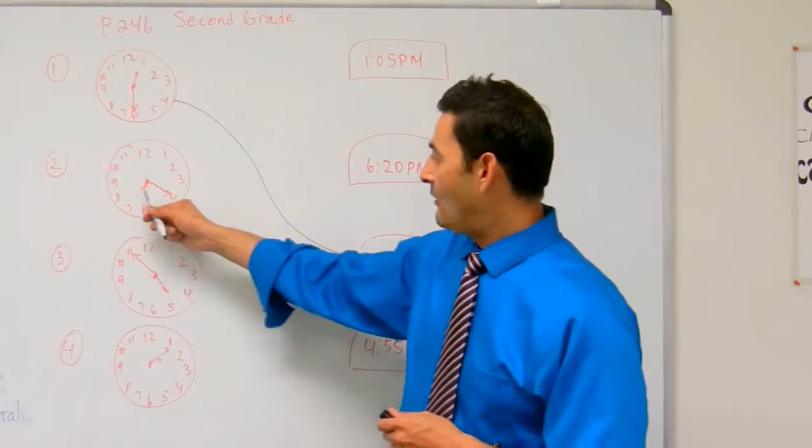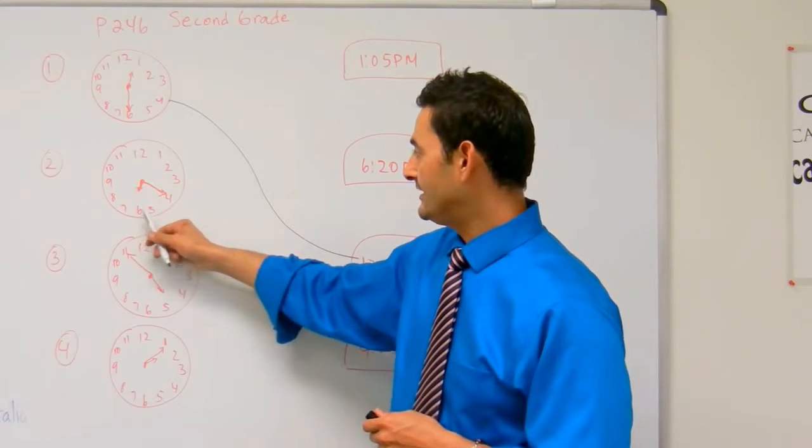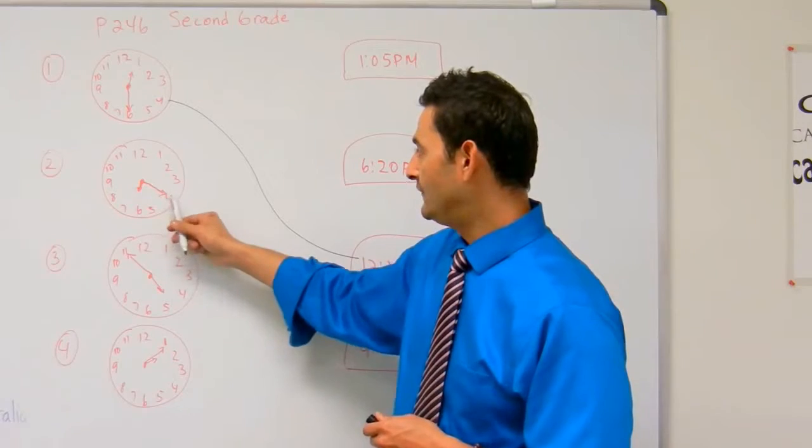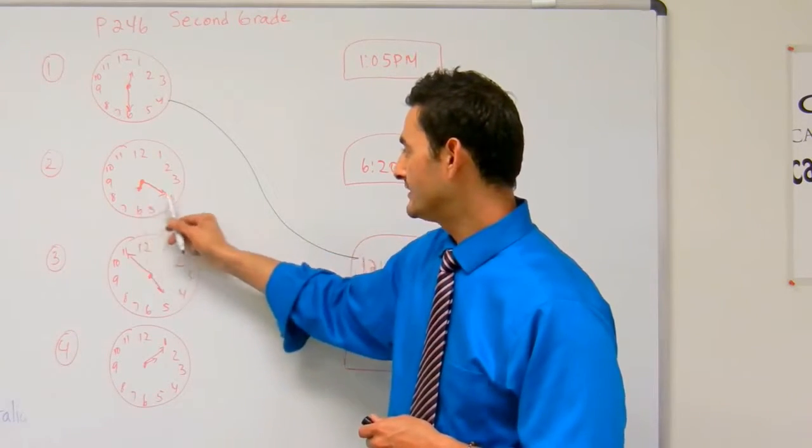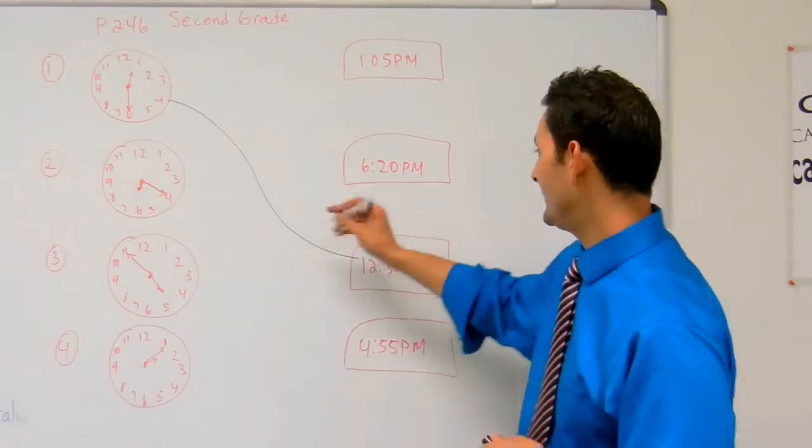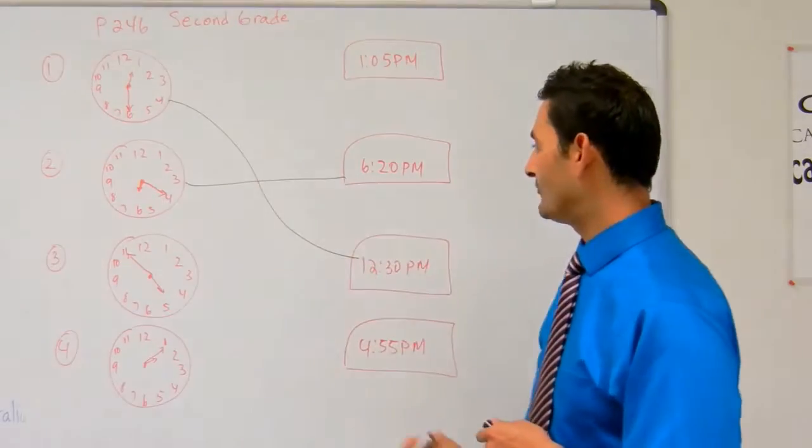Number 2, the hour hand is past the 6, so it's 6. And then the minute hand is at the 4, 5, 10, 15, 20, 6:20. Where's 6:20? It's right there. Match that right there.